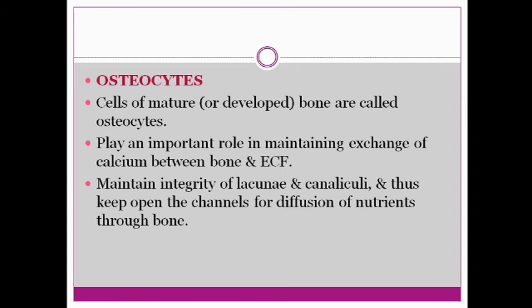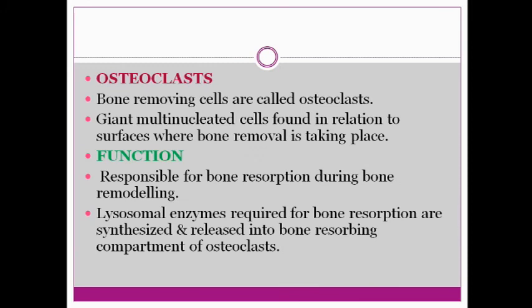After osteoblasts take part in bone formation, they become osteocytes — cells embedded in calcified bone. The diagram represents where these cells are present: osteoblasts, osteocytes, and osteoclasts. These cells play a very important role in exchange of calcium. They maintain the integrity of the lacunae and maintain the integrity of your bone, with a very important function in maintaining exchange of calcium between bone and ECF.